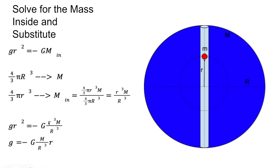And then if we substitute for it, we get that g is equal to negative g times m over capital R cubed times r. So it is a linear function of the distance from the center of the Earth.